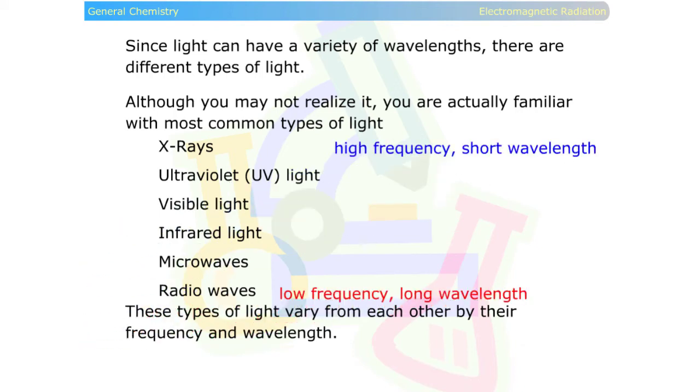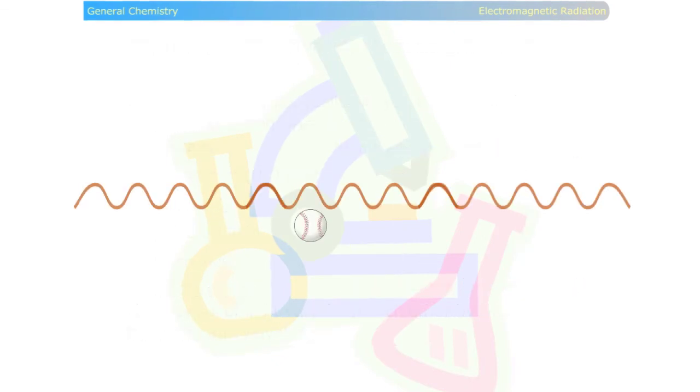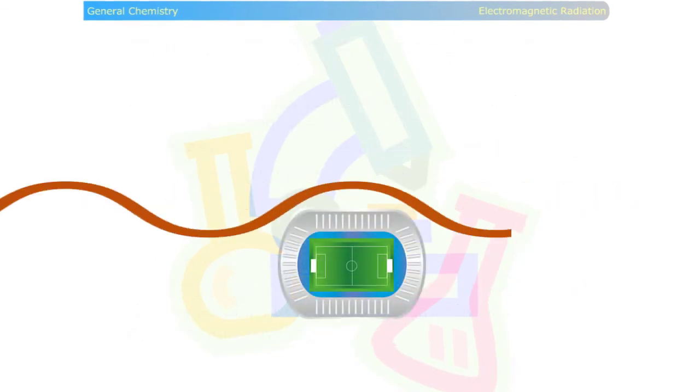If you could see radio waves, their wavelengths would range from the width of a baseball to the length of a soccer field or longer.